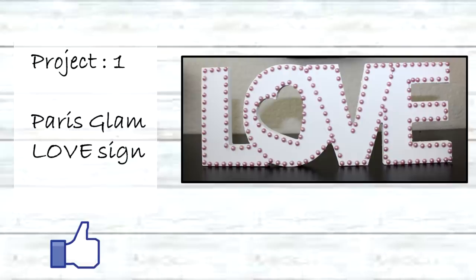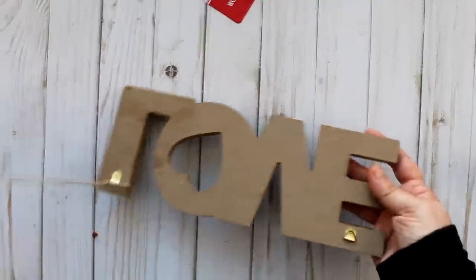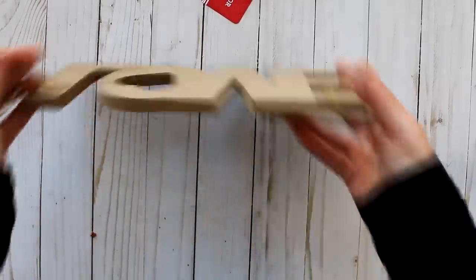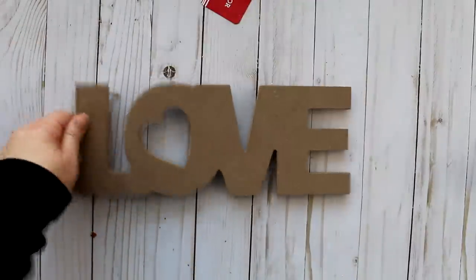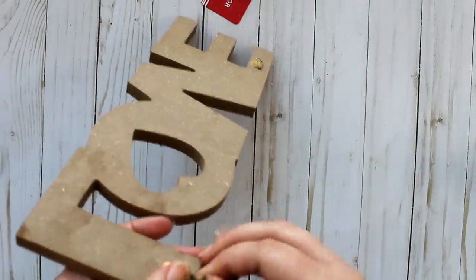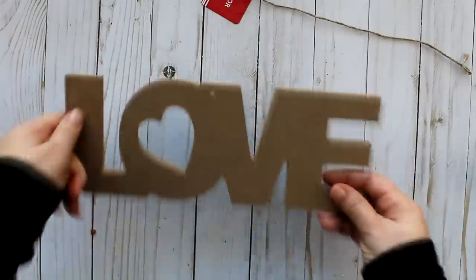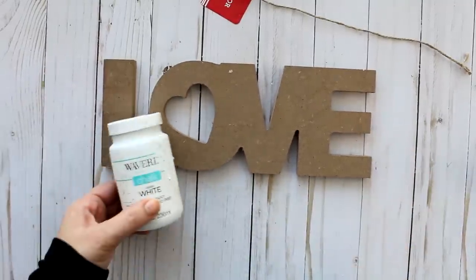The first DIY is this Pink Pearl Paris Glam Love Sign. I purchased this little cutout love sign from the Dollar Tree. Now this is a hanging sign and it comes with a little twine hanger on the back. I'm going to use this as a freestanding sign so I'm going to go ahead and remove that twine hanger. Then I'm going to paint the sign with a couple of coats of my Waverly White chalk paint.